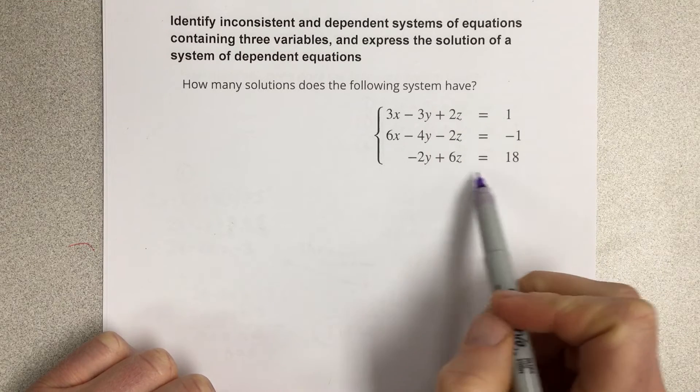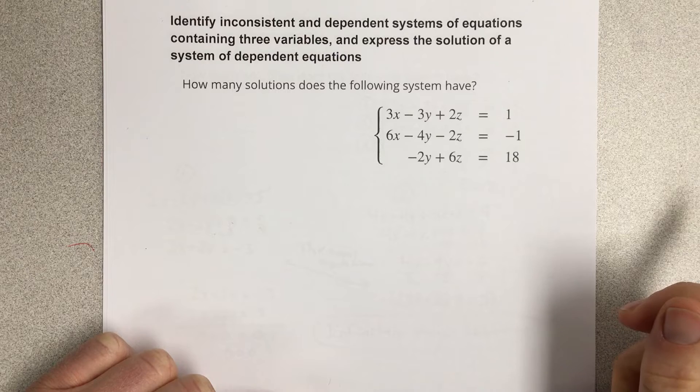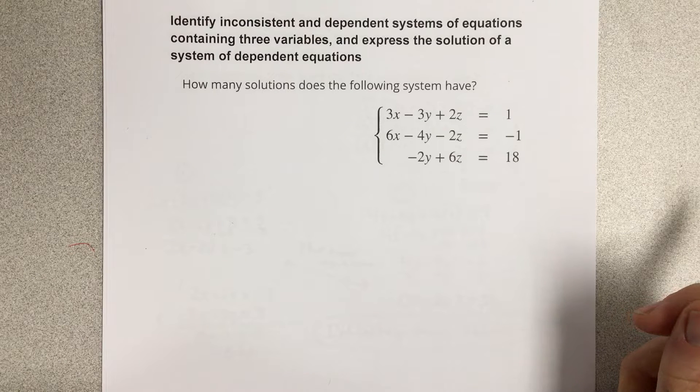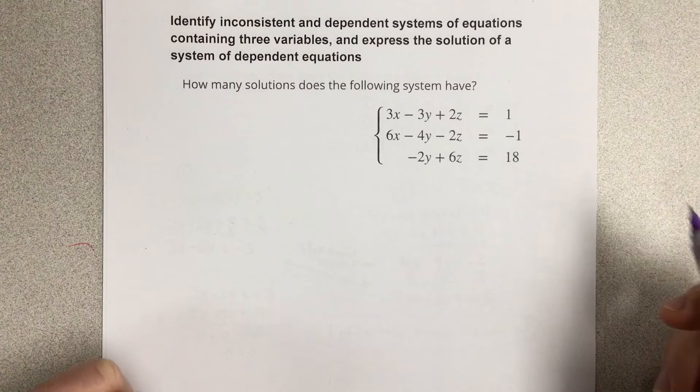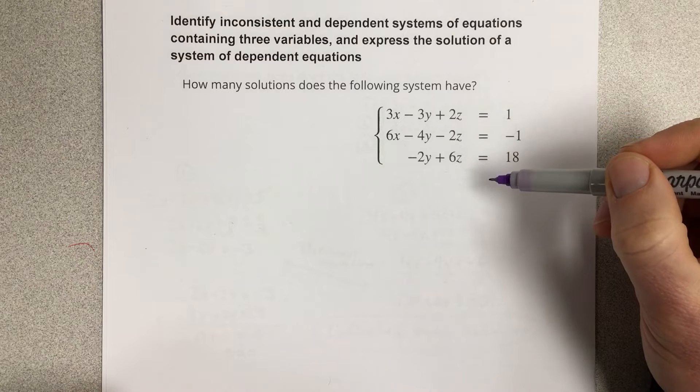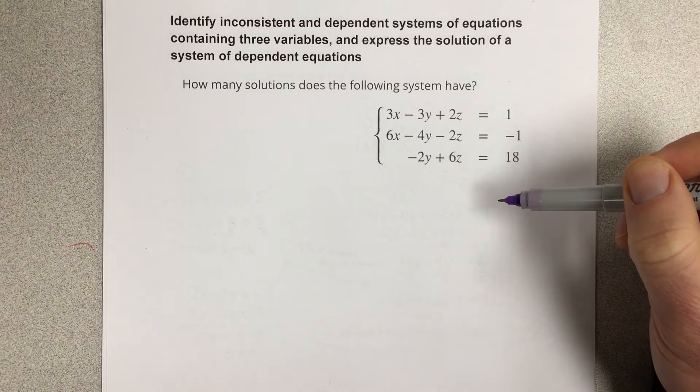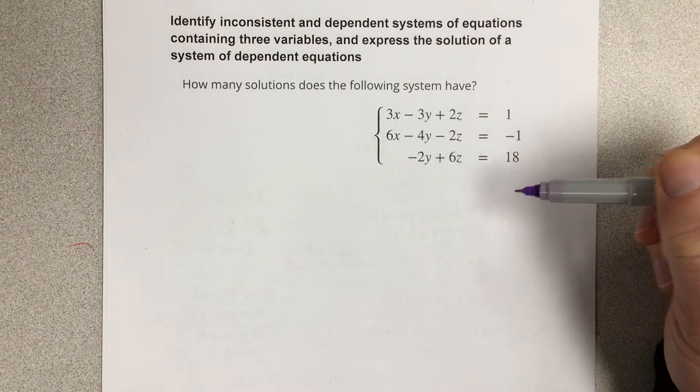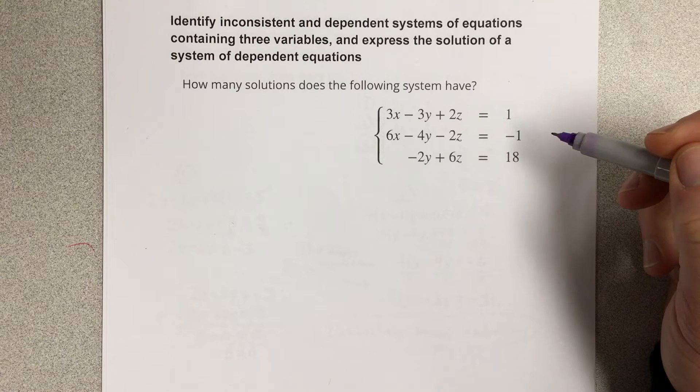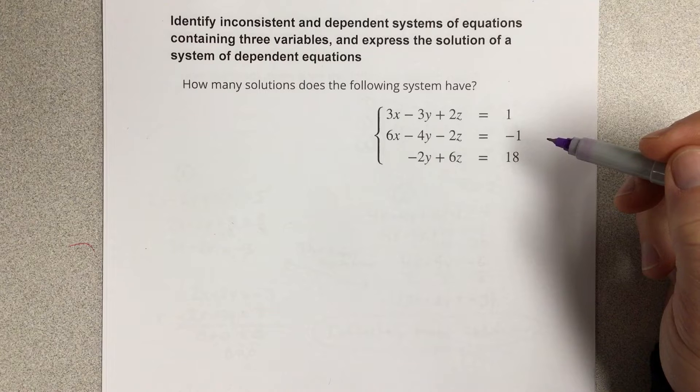It gives you three equations and what we're going to do is we're going to use elimination essentially to cancel out some variables and see if we can find a solution. We might end up with no solutions or infinite solutions or just one solution for our answer.